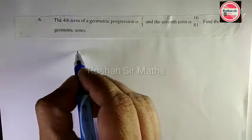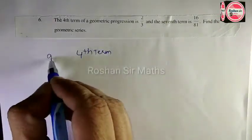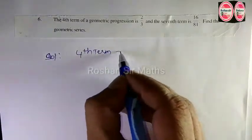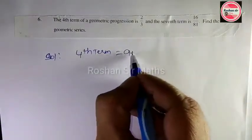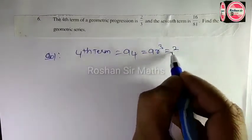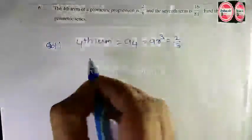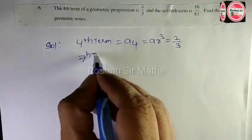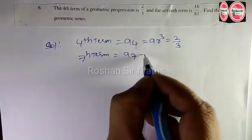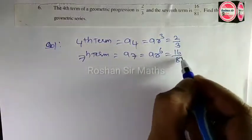Fourth term given: A4 is equal to AR power of 3, and this answer is 2 by 3. For the seventh term, A7 is equal to AR power of 6, which is equal to 16 by 81.